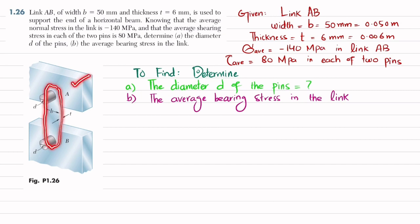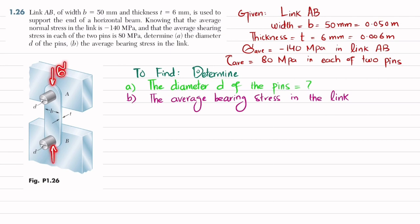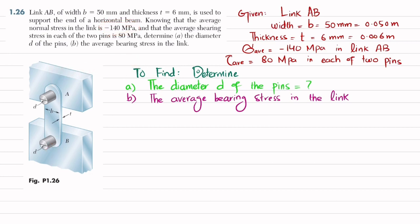This is a horizontal beam supported by link AB, which has two pins. The width of this link is 50 millimeter and thickness is 6 millimeter. Due to this support, there is a compressive stress — sigma average equals 140 megapascal. It is given as minus 140, so the negative sign means compression. You have to determine the diameter of the pin having average shearing stress of 80 megapascal, and then find the average bearing stress in link AB.